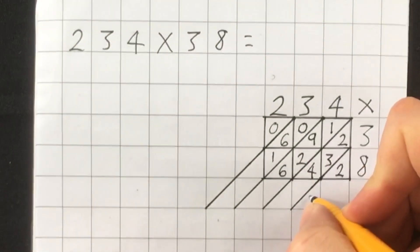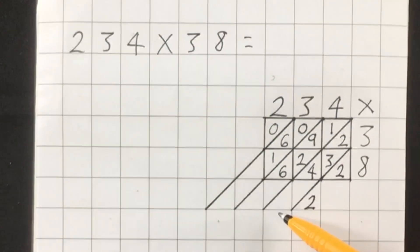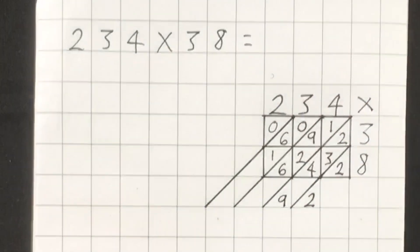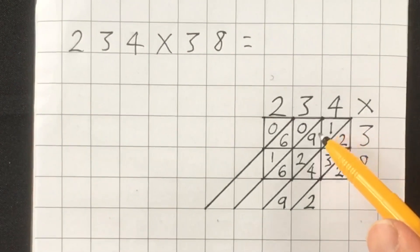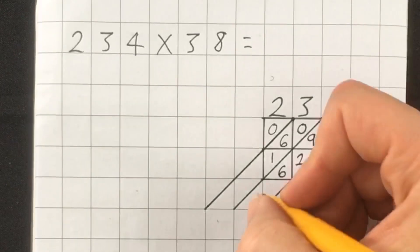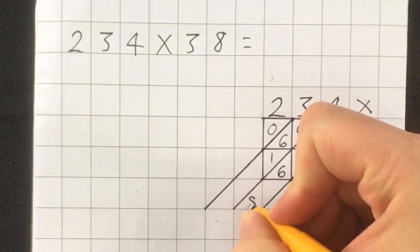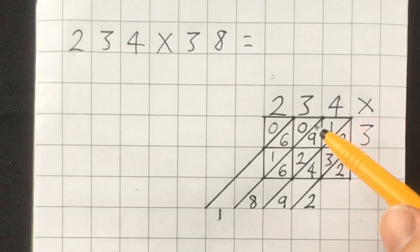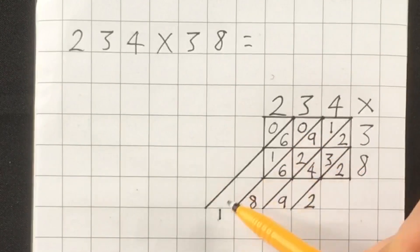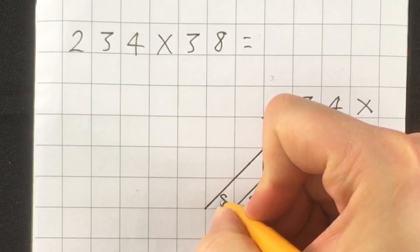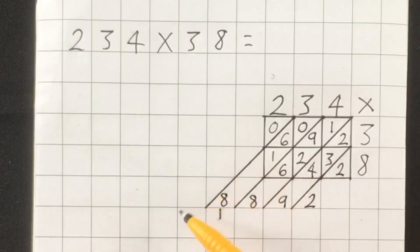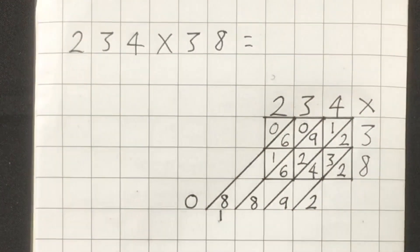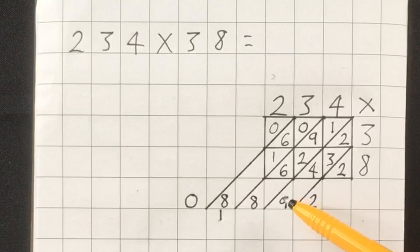And the final step is to add up the numbers in the diagonals. So the first diagonal is a two. The second diagonal is two plus three is five plus four is nine. And I write the answer here. The third diagonal, one plus nine plus two plus six is eighteen. So I write eight and I carry the one. Then I do zero plus six plus one plus one, which is eight. And I have to remember this digit as well, or in this case it is zero. And the answer is eight thousand eight hundred and ninety-two.